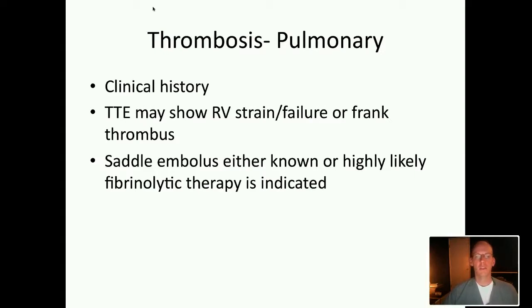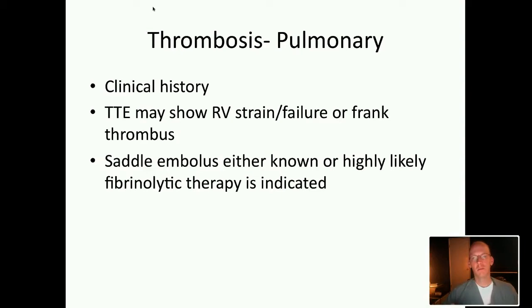Pulmonary embolus: high index of suspicion — a post-op patient on day two or three, immobile, not anticoagulated, with sudden respiratory distress rapidly decompensating to PEA arrest. Transthoracic echo may show RV strain, RV failure, or even a frank thrombus in the RV outflow tract. For a known or highly likely saddle embolus, thrombolysis — TPA or streptokinase — may be indicated. Unlike MIs, the data is more supportive for severe PE. Make the decision at the moment, and mobilize pharmacy early to mix it.